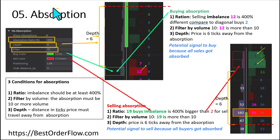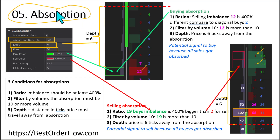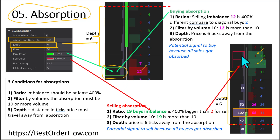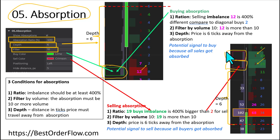Under section 5 we can select how we would like to display absorption. This is the buying absorption and this is the selling absorption — there are actually two selling absorption signals right here.